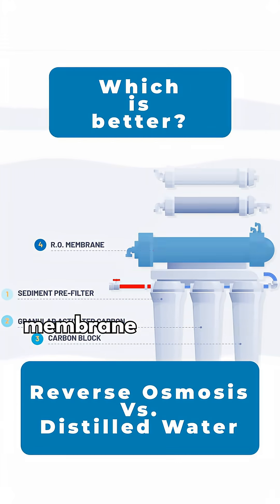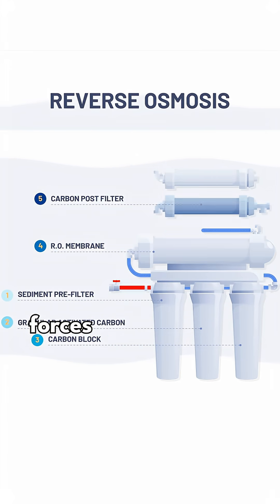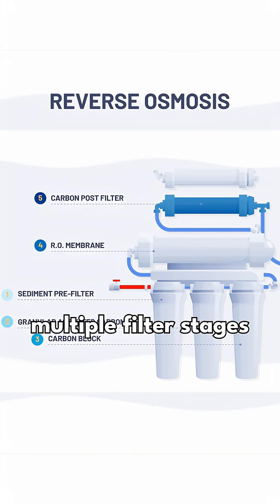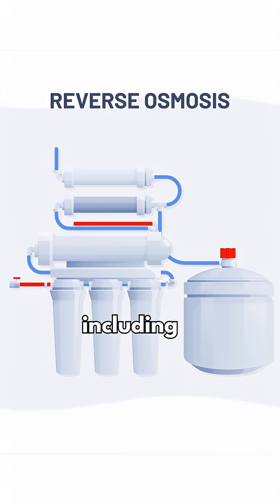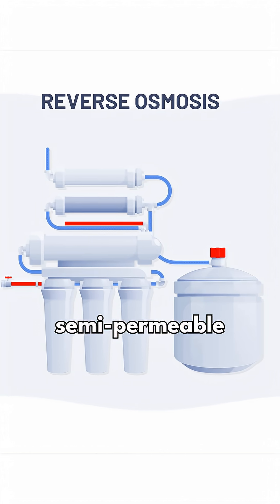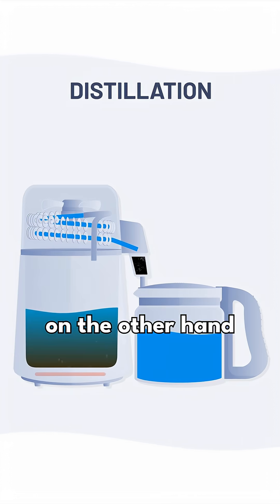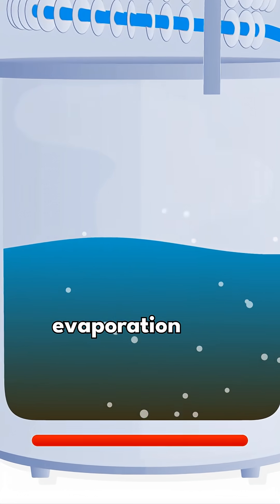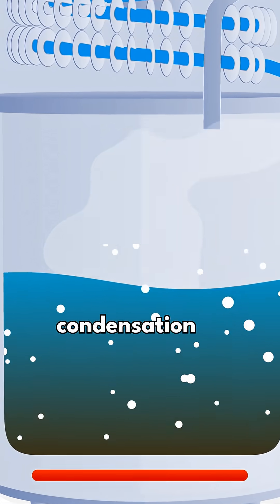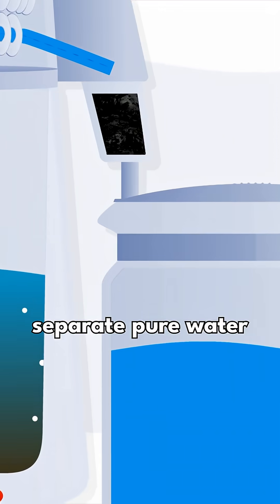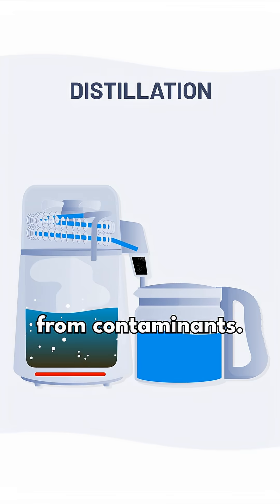Reverse osmosis uses membrane separation where pressure forces water through multiple filter stages including a semi-permeable membrane. Distillation, on the other hand, relies on evaporation and condensation to separate pure water from contaminants.